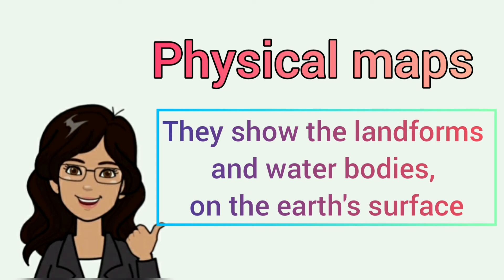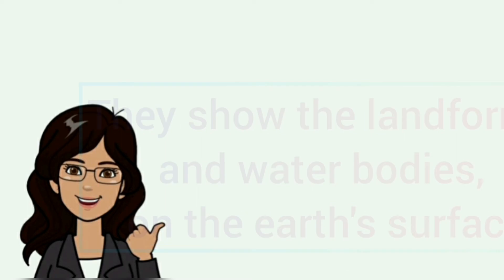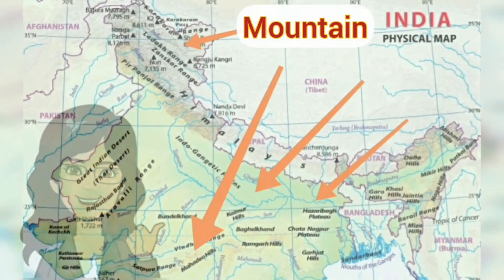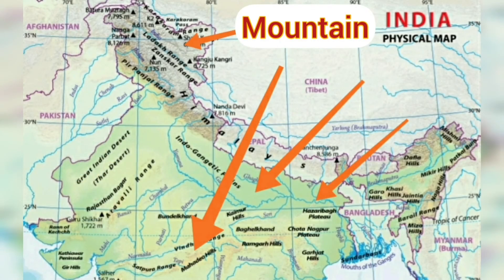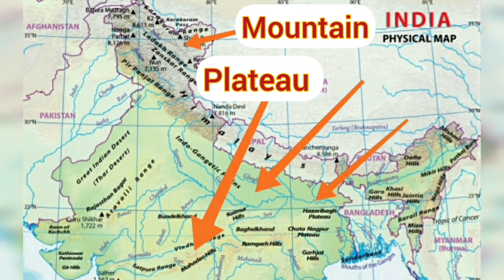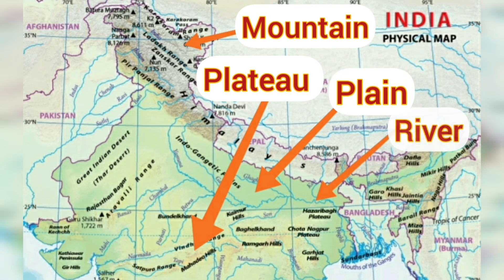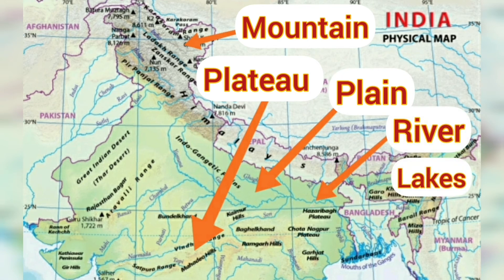Physical maps show the different landforms and water bodies on the earth's surface, such as mountains, plateaus, plains, rivers, lakes, and seas. The different features are shown in different colors.